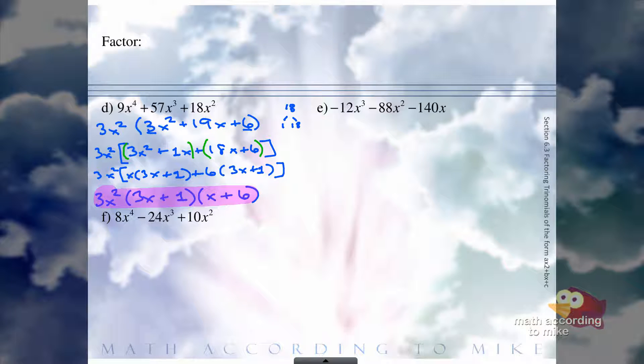Same stuff for part E. First pull out a GCF. I'm thinking that's a negative 4X. If we pulled out a negative 4X, we are left with a 3X squared plus 22X plus 35. So off to the side, 3 times 35 is 105, A times C. The factors of 105 that add up to 22 would be 15 and 7.